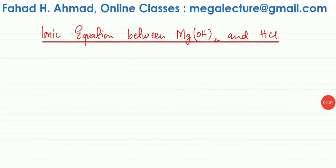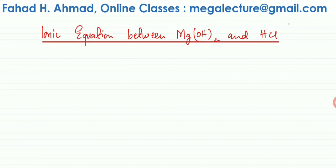In this lecture we're going to learn how to write an ionic equation between MgOH₂ and HCl. The first thing we need to figure out is what the reaction is going to be. Metal hydroxides are bases and HCl is an acid. Acid produces H⁺ ions and bases accept H⁺ ions, so it's an acid-base reaction.